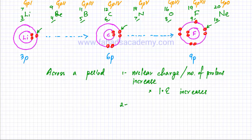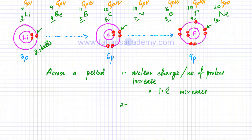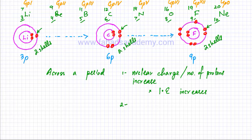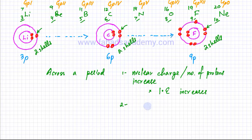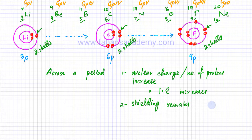The second factor: as you move across a period, the number of shells remains exactly the same. Lithium has two shells, carbon also has exactly two shells, and fluorine also has exactly two shells. So shielding remains constant throughout — the number of shells coming between the nucleus and the outermost electron is exactly the same for all elements in a single period.